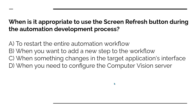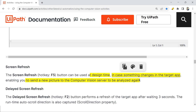Now the second custom question: when is it appropriate to use the screen refresh button during the automation development process? Options: A — to restart the entire automation workflow; B — when you want to add a new step to the workflow; C — when something changes in the target application's interface; D — when you need to configure the computer vision server. The correct answer is C — when something changes in the target application's interface. The words 'something changes in the target app' are very important.